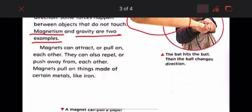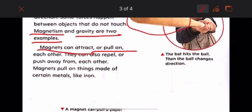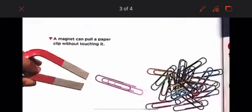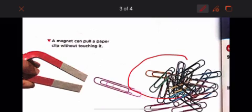Magnet. Magnets can attract or pull on each other. They can also repel or push away from each other. Magnets pull on things made of certain metals, like iron. Magnet can pull a paper clip without touching it. Look, the magnet is not touching the paper clip. So the magnet can pull a paper clip without touching it.